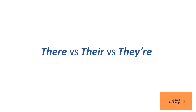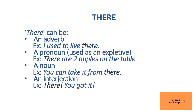We're going to start with the first word: T-H-E-R-E, or 'there'. This word can be an adverb, a pronoun, a noun, or even an interjection. As an adverb — adverbs talk about time, place, and manner — it means 'in or at that place or location', or 'to or toward that place, away from the speaker'. So you say 'go there'. Example: 'I used to live there' — it answers the question 'where?'